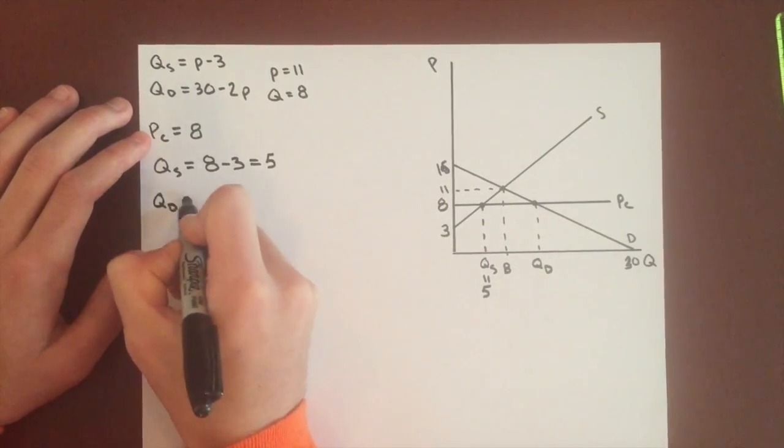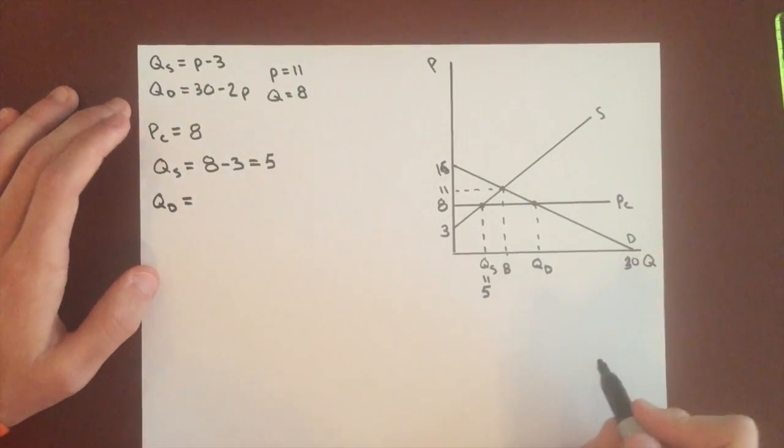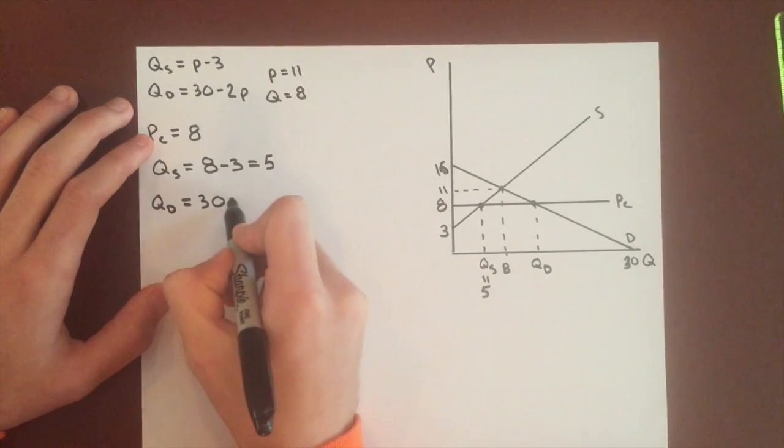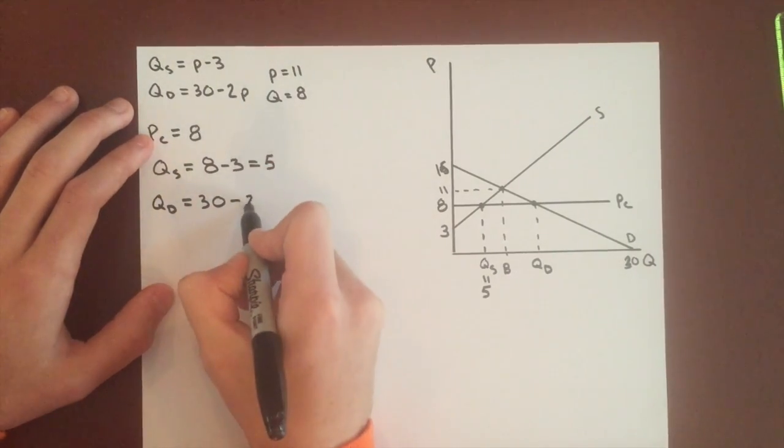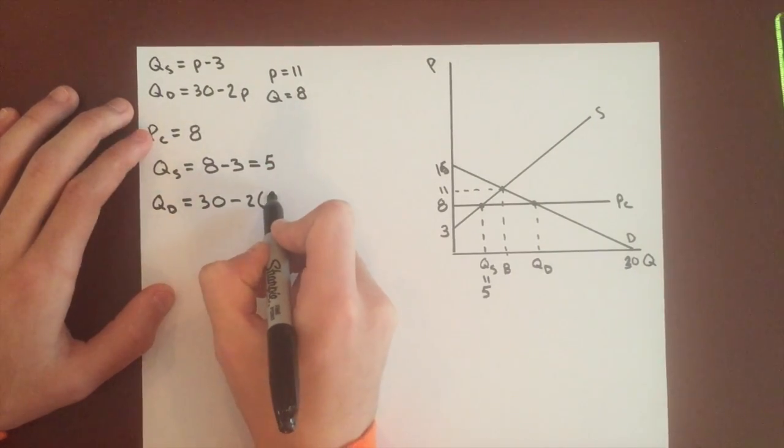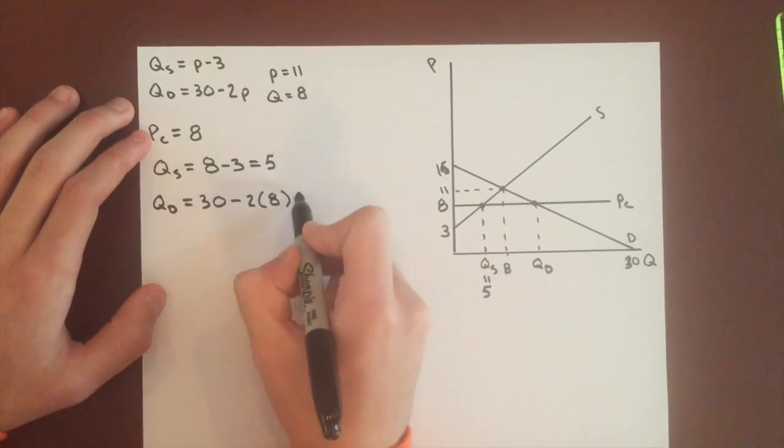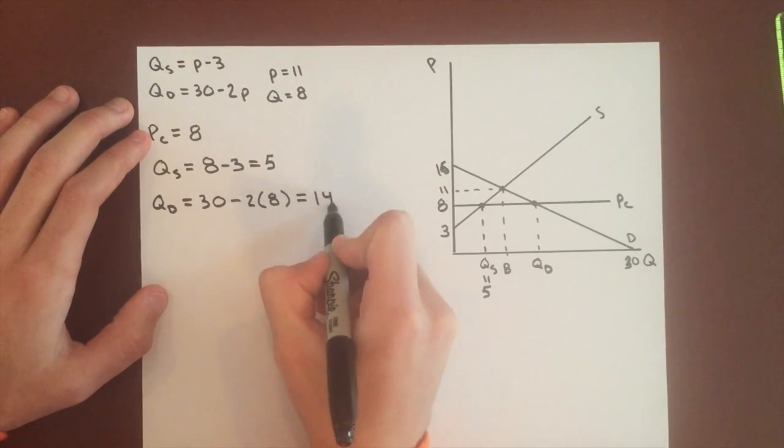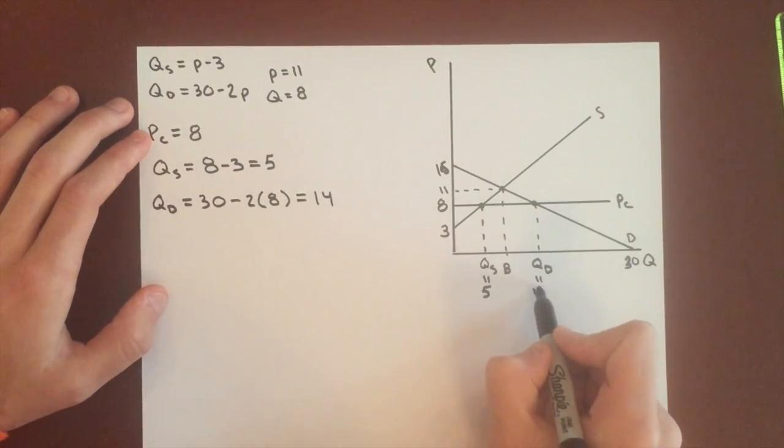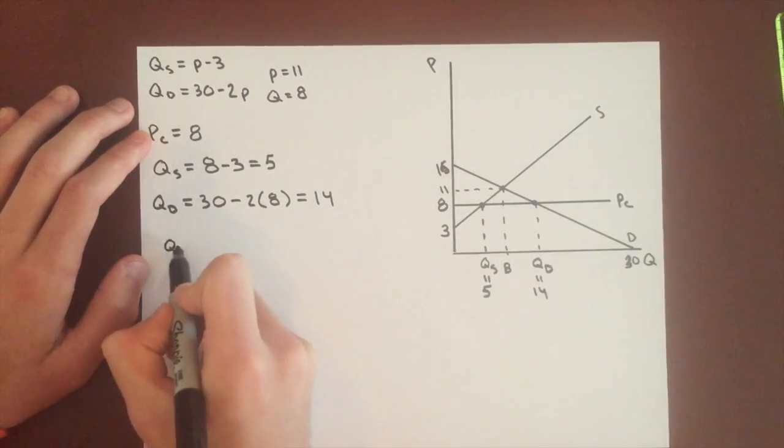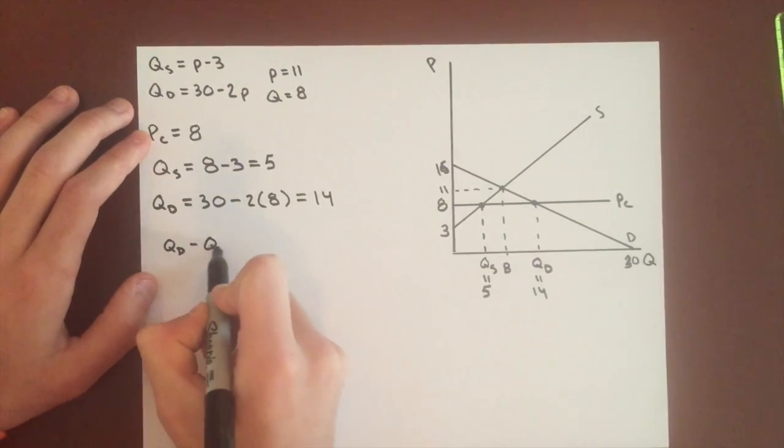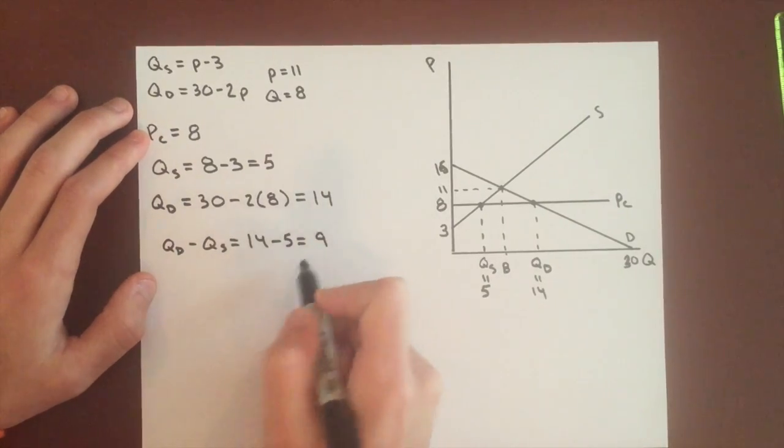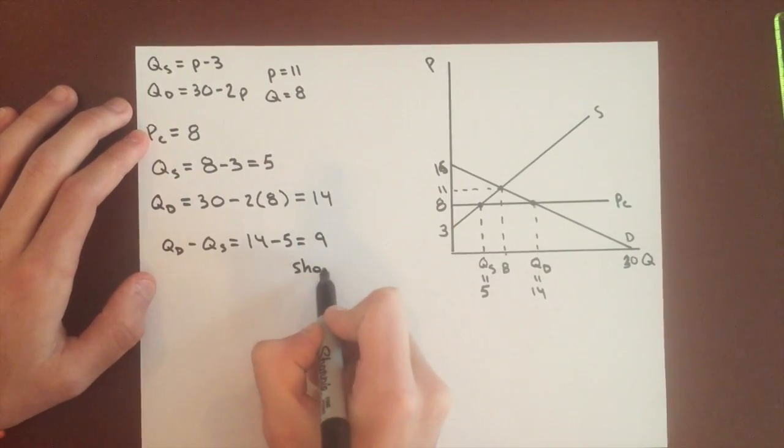Then let's find quantity demanded so we can see how much of a shortage we have here. It's 30 minus 2 times the new price is 8. So 30 minus 16 there, and that is 14. So we have quantity demanded minus quantity supplied, 14 minus 5, so we have a shortage of 9 units.